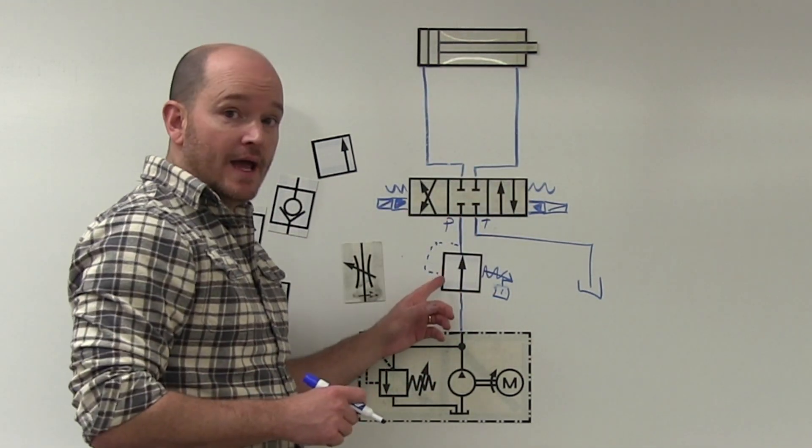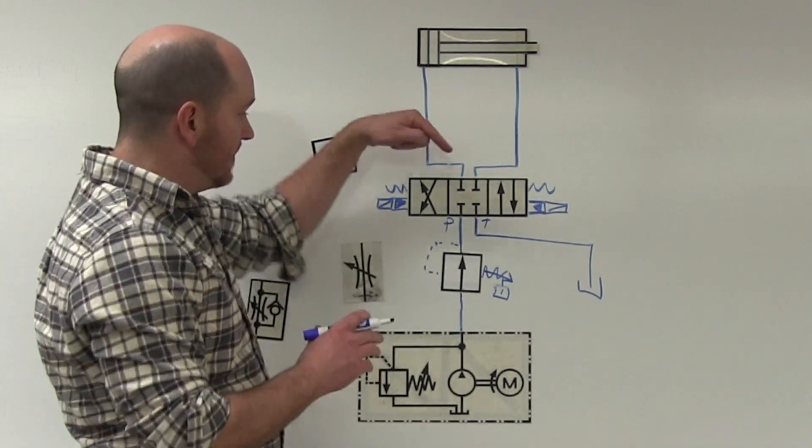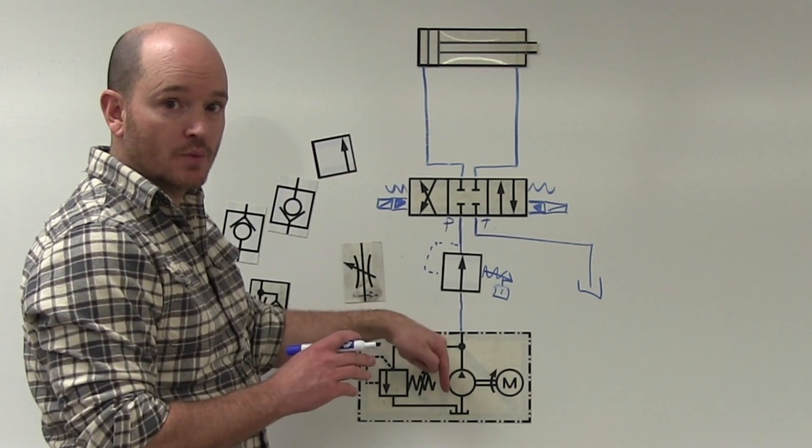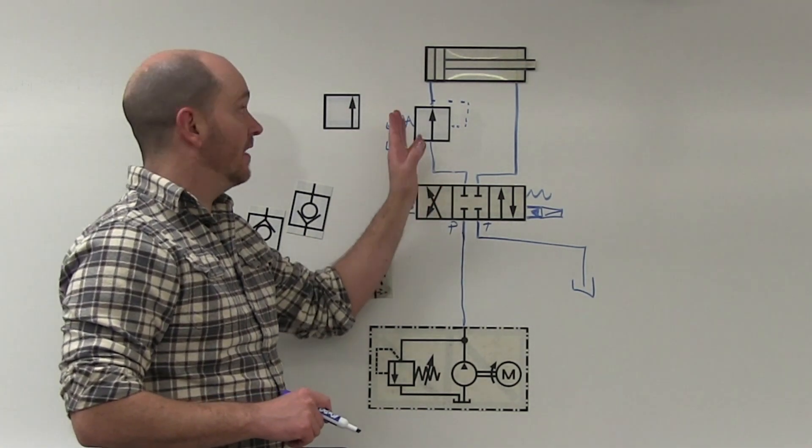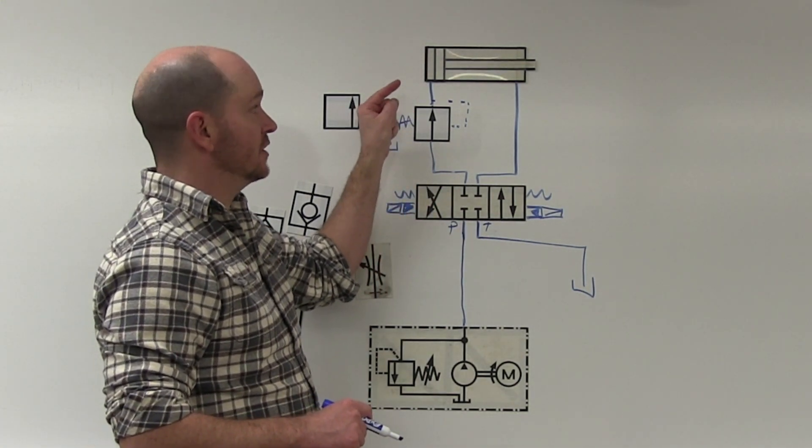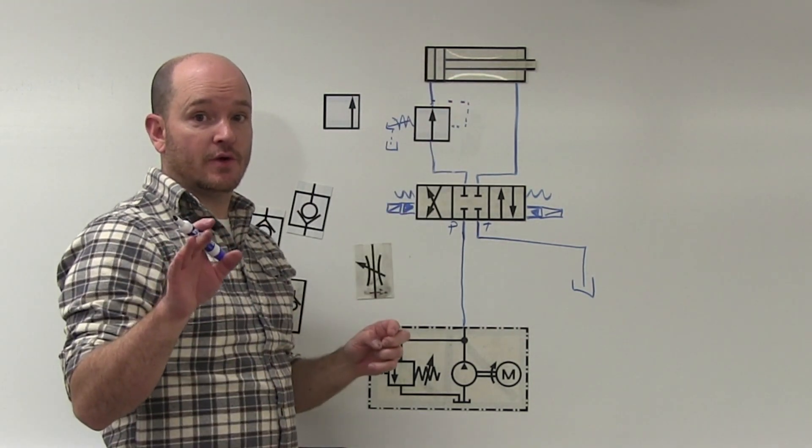And this works great. Notice I don't need a bypass check valve because, again, oil is not coming down this way. Now, let's say I have a pressure reducing valve that I want to be able to reduce the pressure in just one direction. Okay, this is great.